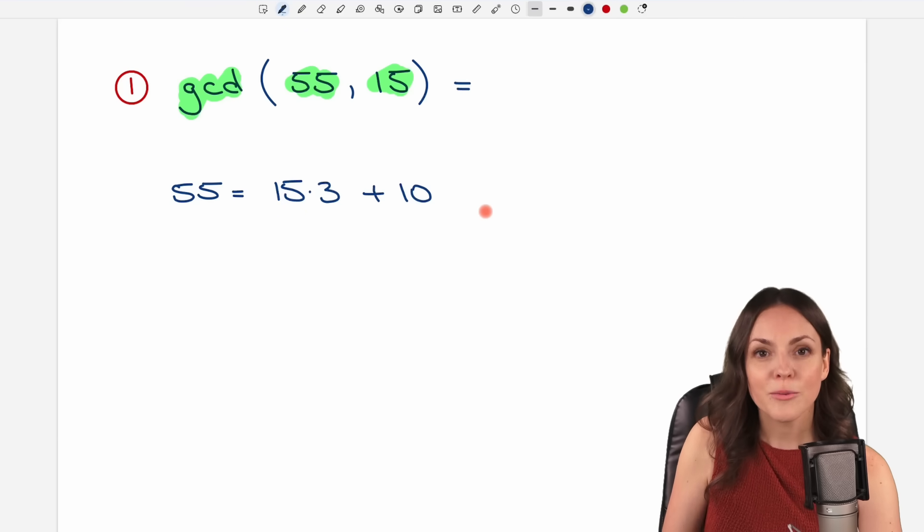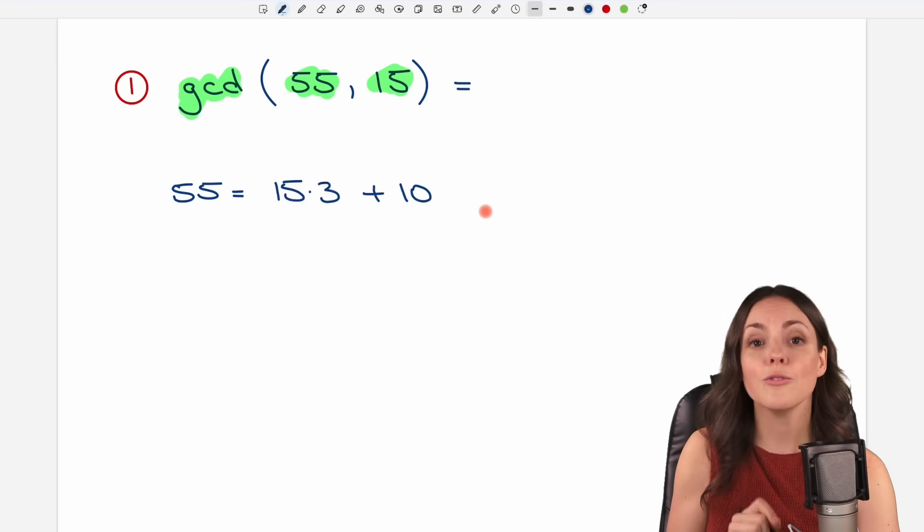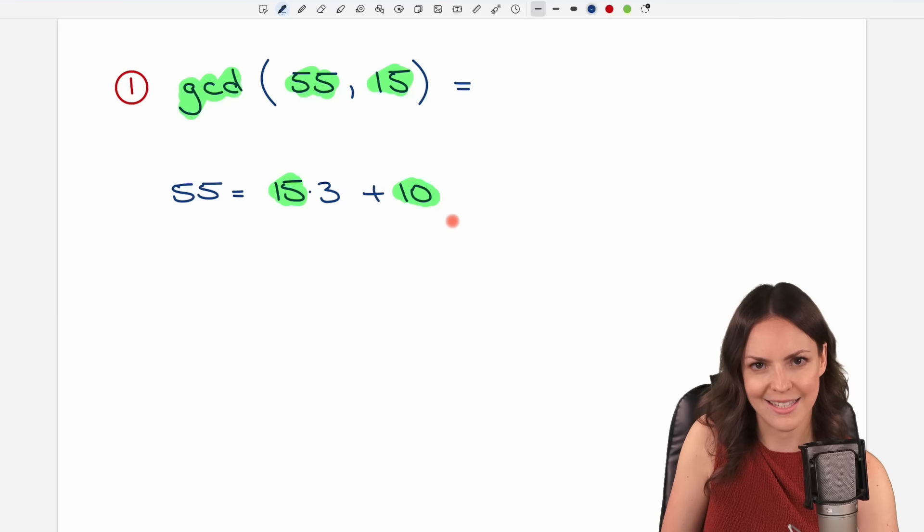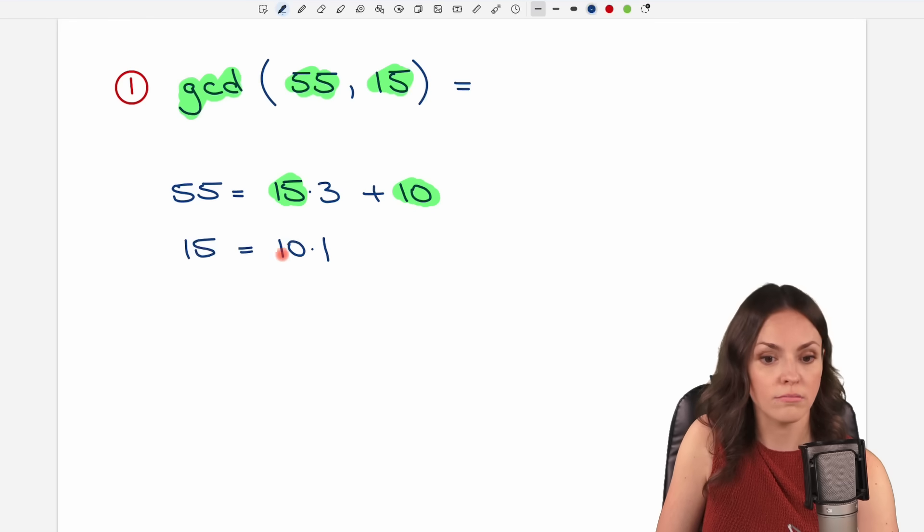And now we're going to repeat exactly this process we just did with new numbers, because now on the right side we have smaller numbers. This was our smaller number and our remainder. Let's do exactly the same thing. We take the 15 and ask ourselves how often does the 10 go into the 15? Well, we can do 10 times 1, and then we are at 10.